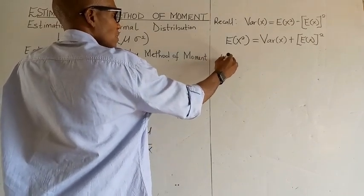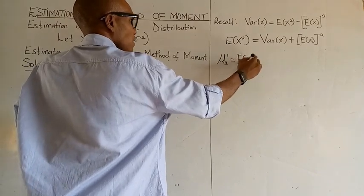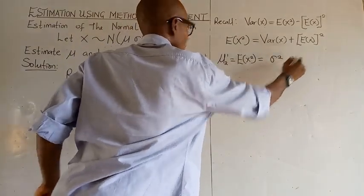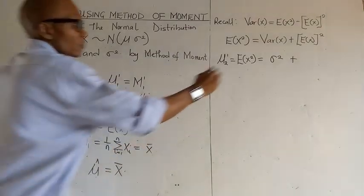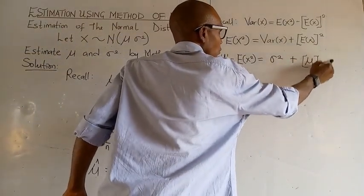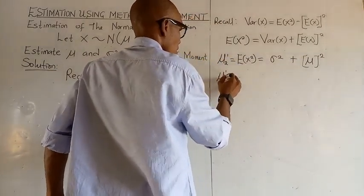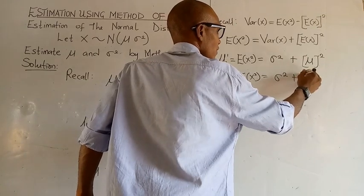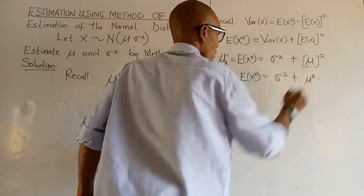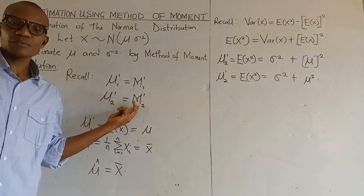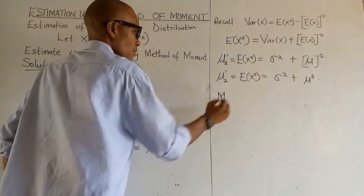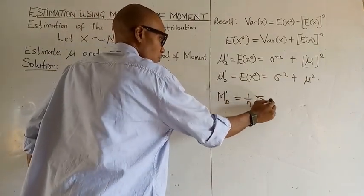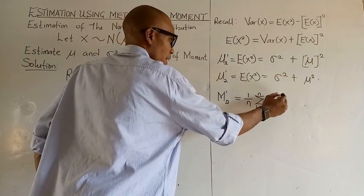It means this is our second population moment to be equated to the sample mean. We have mu two to be equal to the expected value of X squared, which equals variance plus mu squared. We now go to the second sample moment. We know that the second sample moment is equal to 1 over n, summation from i equals 1 to n of Xi squared.